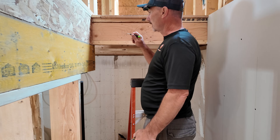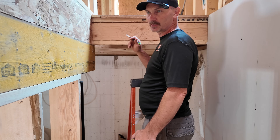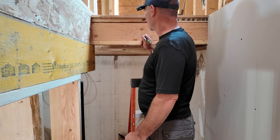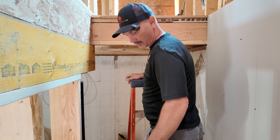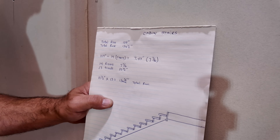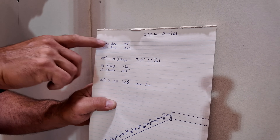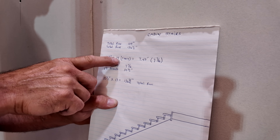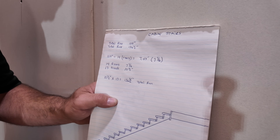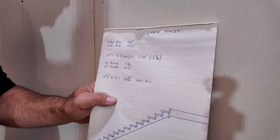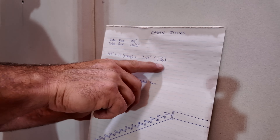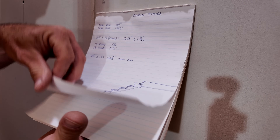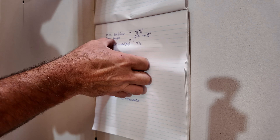With these measurements I can figure out how many risers and treads I'll have — you always have one less tread than risers. I've already worked out the math: total rise of 104 inches divided by 14 risers gives 7.43 inches, which is 7 and 7/16 inches. That falls within the acceptable range and is a pretty comfortable step, so we're going to use 7 and 7/16 inches with 14 risers.